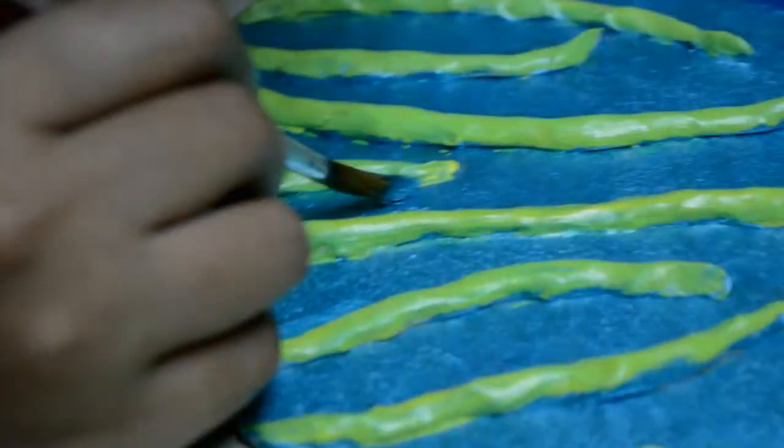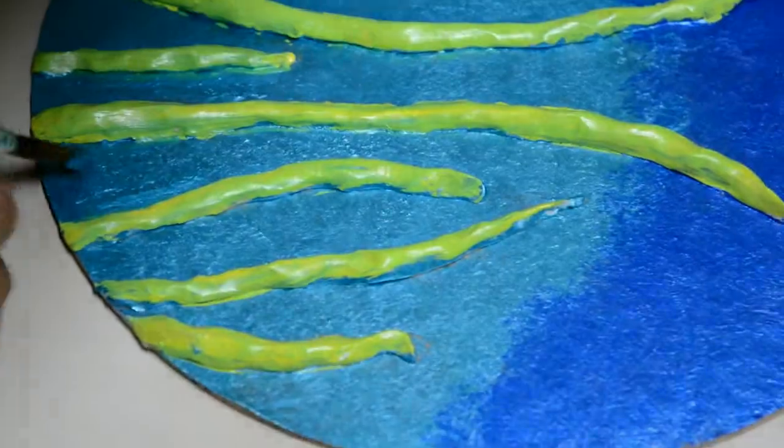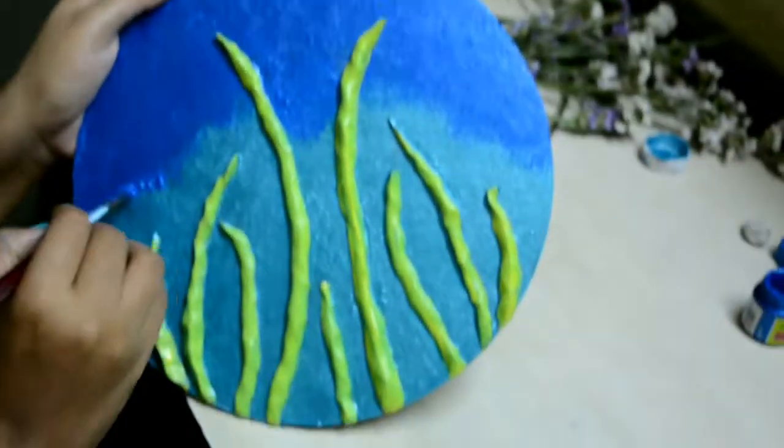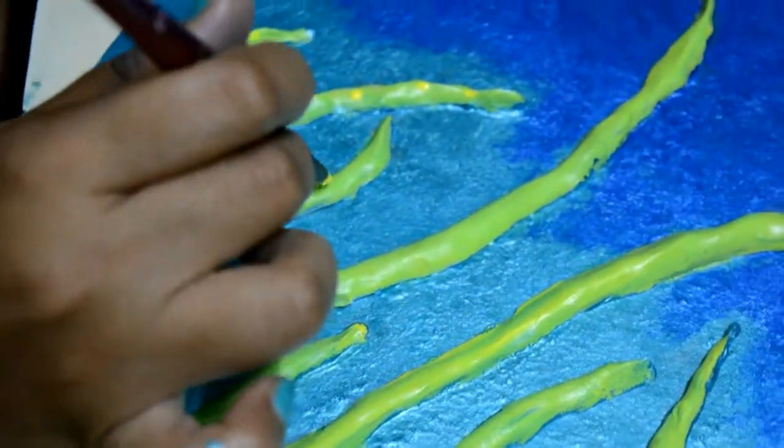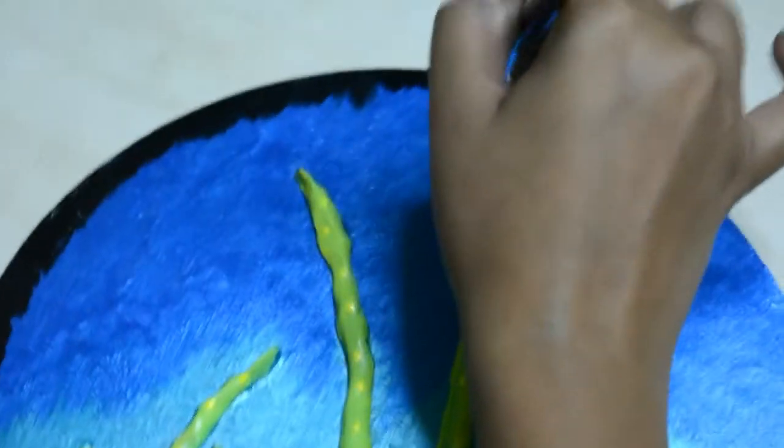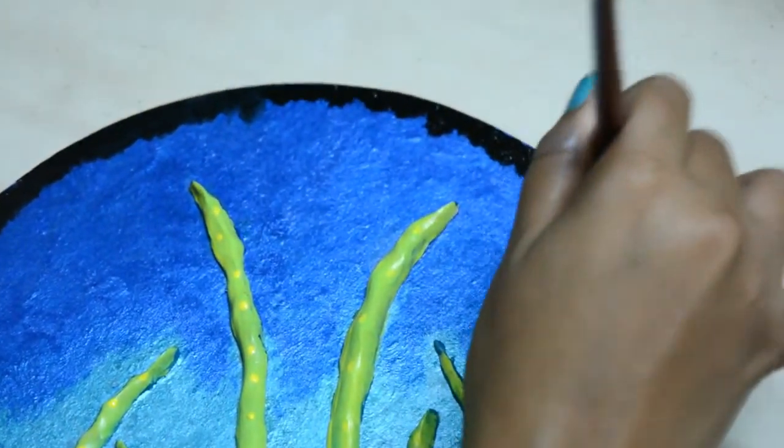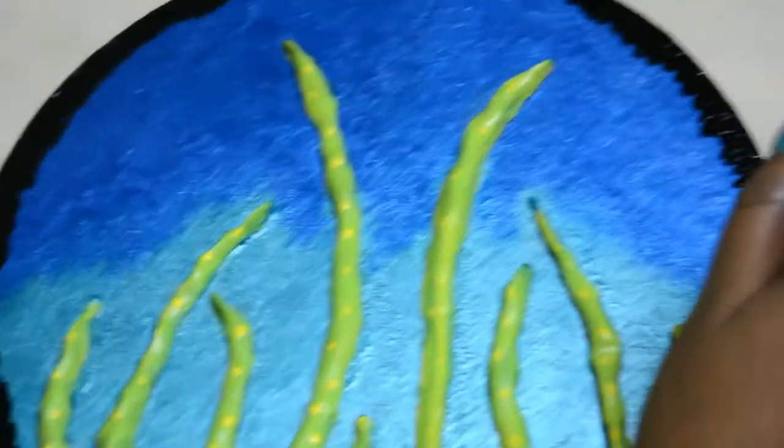Once everything is ready, it's time to conceal the glitches if any. For the finishing effect, we are going to make a black border around three-fourths part of our cake board. And yes, our painting is now done.